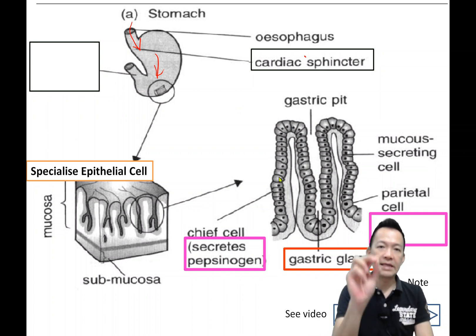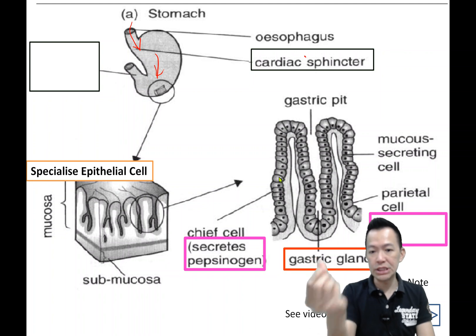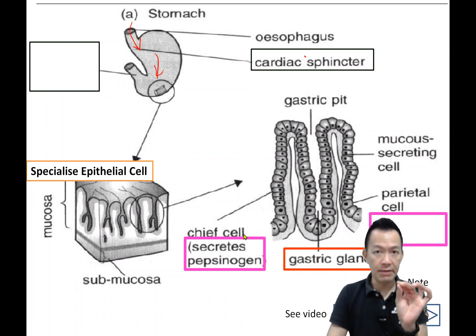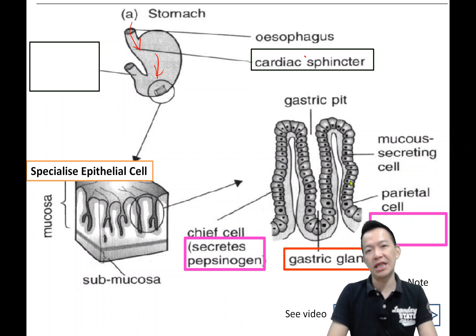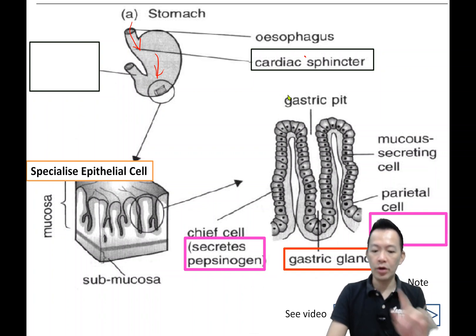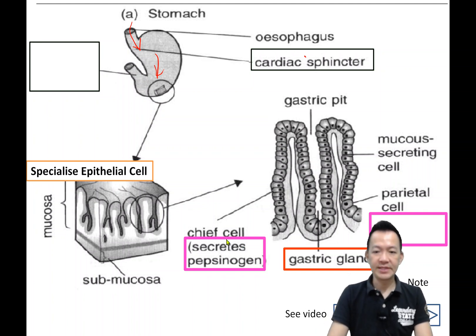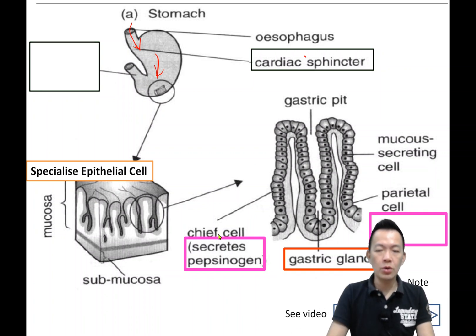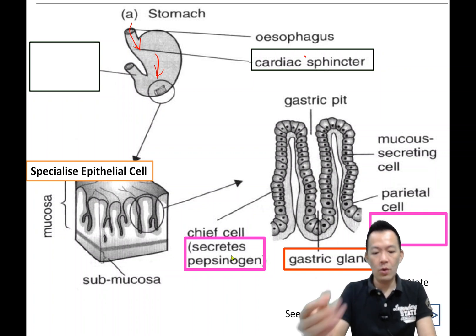Pepsinogen is the inactive form of pepsin. Why must it be pepsinogen and not pepsin? Because pepsin is an enzyme that can digest protein easily. If the chief cell produced pepsin directly, the pepsin would digest the cell itself — 它会把自己消化掉.